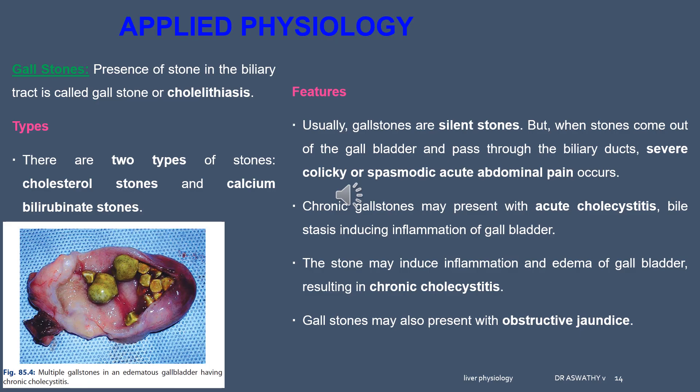Applied physiology: gallstones. The presence of gallstones in the biliary tract is called gallstone disease or cholelithiasis. There are two types: cholesterol stones and calcium bilirubinate stones. Under abnormal conditions, cholesterol precipitates to form cholesterol gallstones. The conditions include: too much absorption of water from the bile, too much absorption of bile salts and lecithin from the bile, too much secretion of cholesterol, or inflammation of the epithelium of the gallbladder — all these give rise to cholesterol stones.